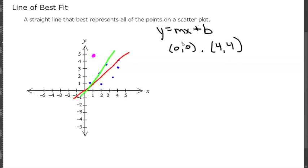Looking at this, if I were to do y1 minus y2 over x1 minus x2 to find my slope, that would be 4 minus 0 over 4 minus 0, which would give me 4 over 4, which is just 1.